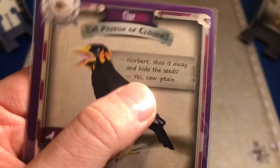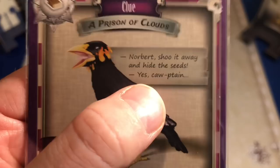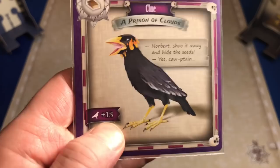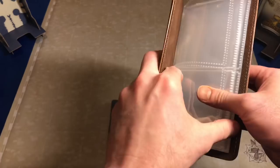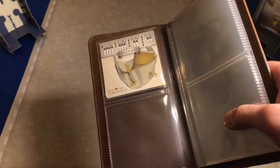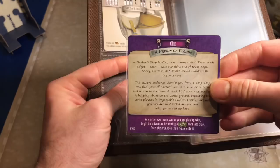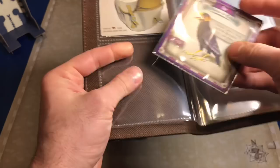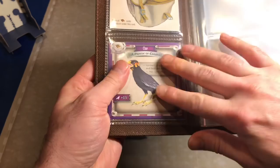We're going to put this curse in our satchel along with our actual satchel on the back. It says a prison of clouds. Norbert, shoo it away and hide the seeds. Yes, Captain. Anytime we see a flag like this when we're making skill checks, we're going to add 13 to this card. We're going to put that with everything inside this journal satchel. This is absolutely sweet. I'm going to slide our satchel journal in here and we're also going to take our clue card. We have to remember to take a 677 card and we're going to slide it right in there.